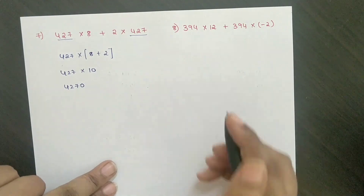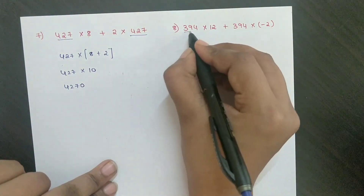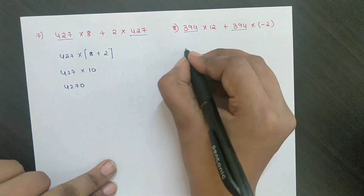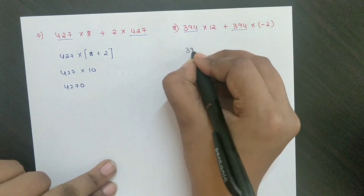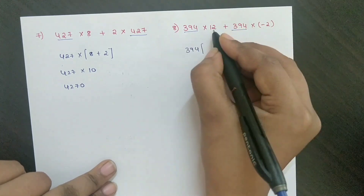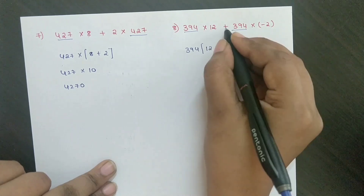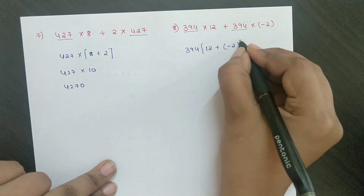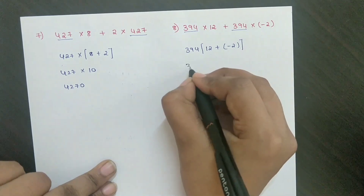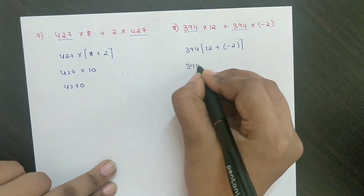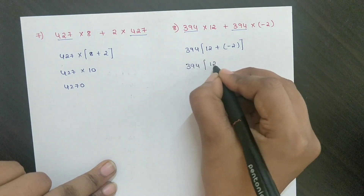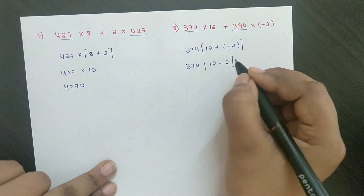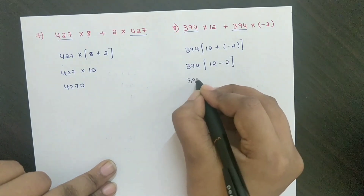In this problem, take 394 as common using the distributive property. The remaining is 12 plus minus 2: 394 into 12 plus into minus minus 2.